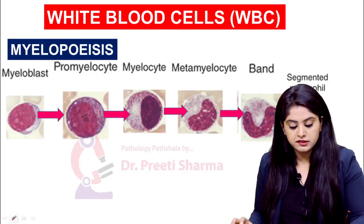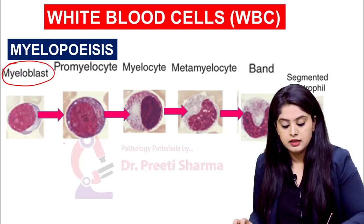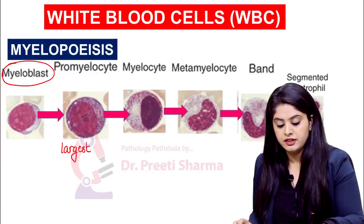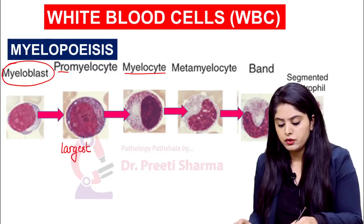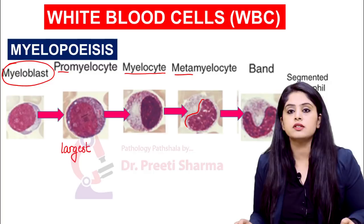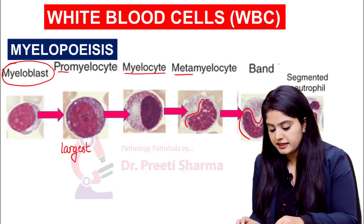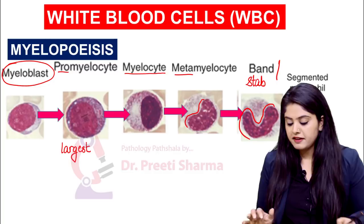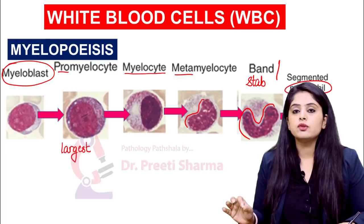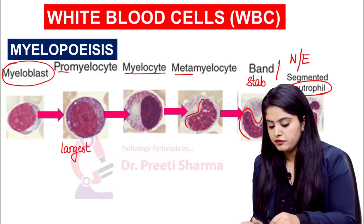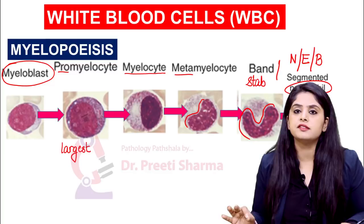The summary: the primitive cell is the myeloblast, the largest cell is the promyelocyte. Then comes myelocyte, then metamyelocyte where the nucleus starts showing indentation. When the indentation increases further, we have a band cell — also known as a stab cell. Finally, in the end, we have reached a mature cell. This mature cell can be a neutrophil, an eosinophil, or a basophil — any of the granular series.